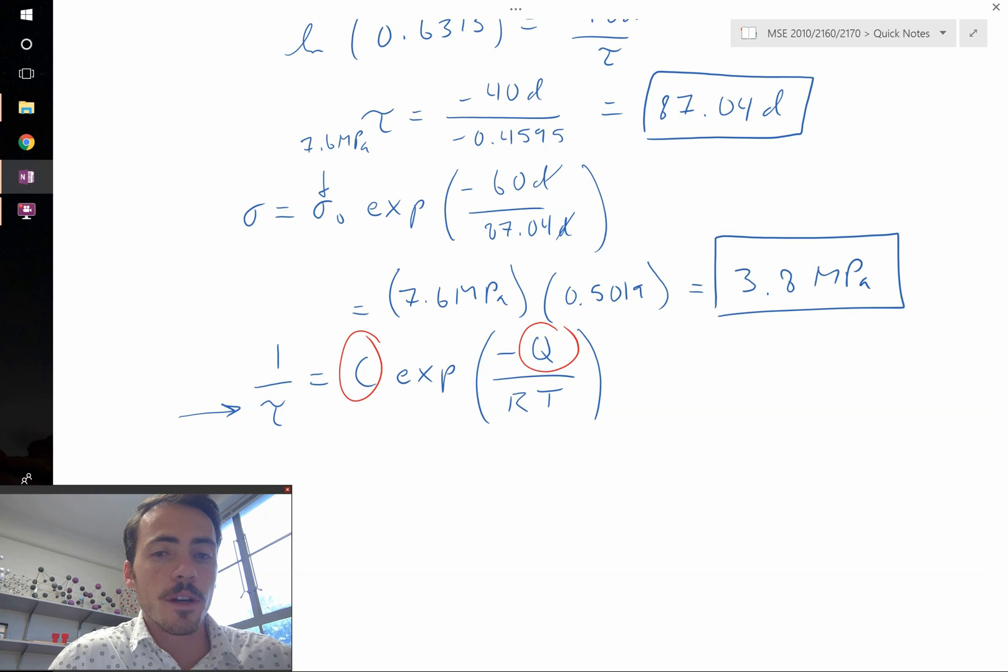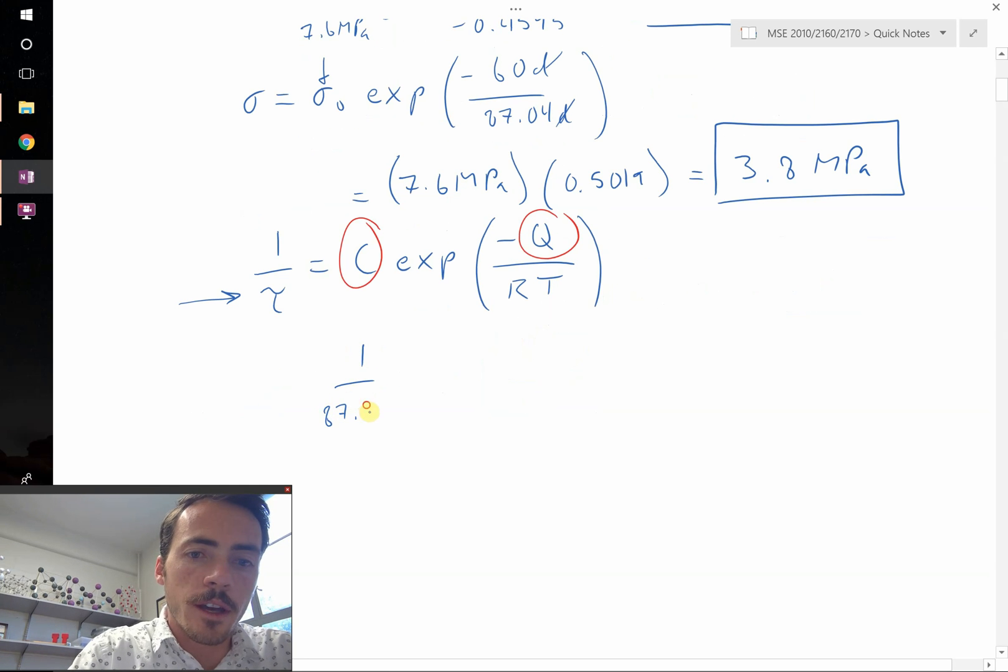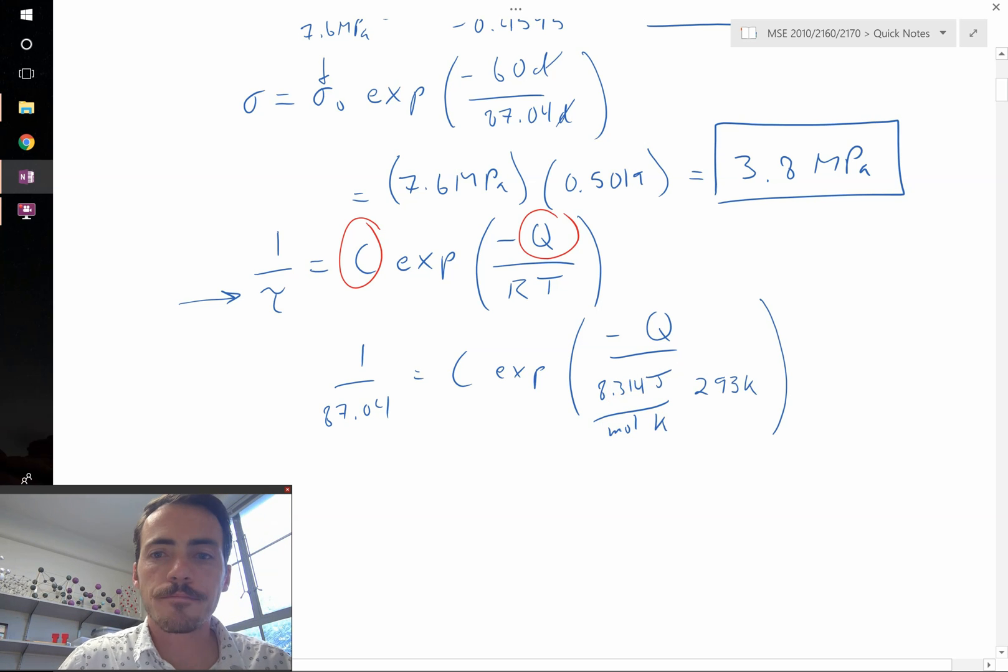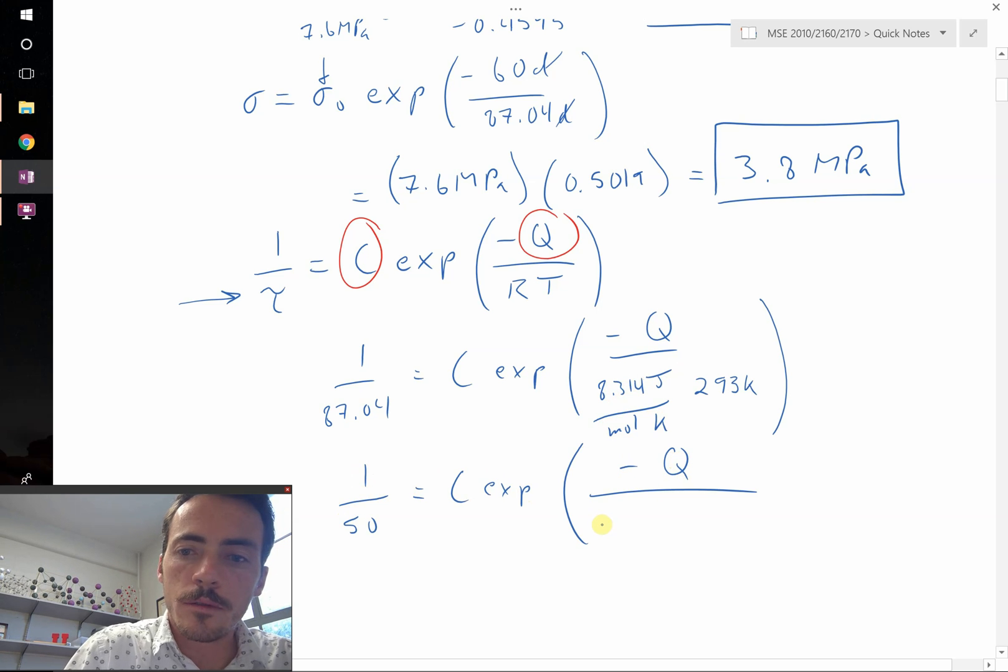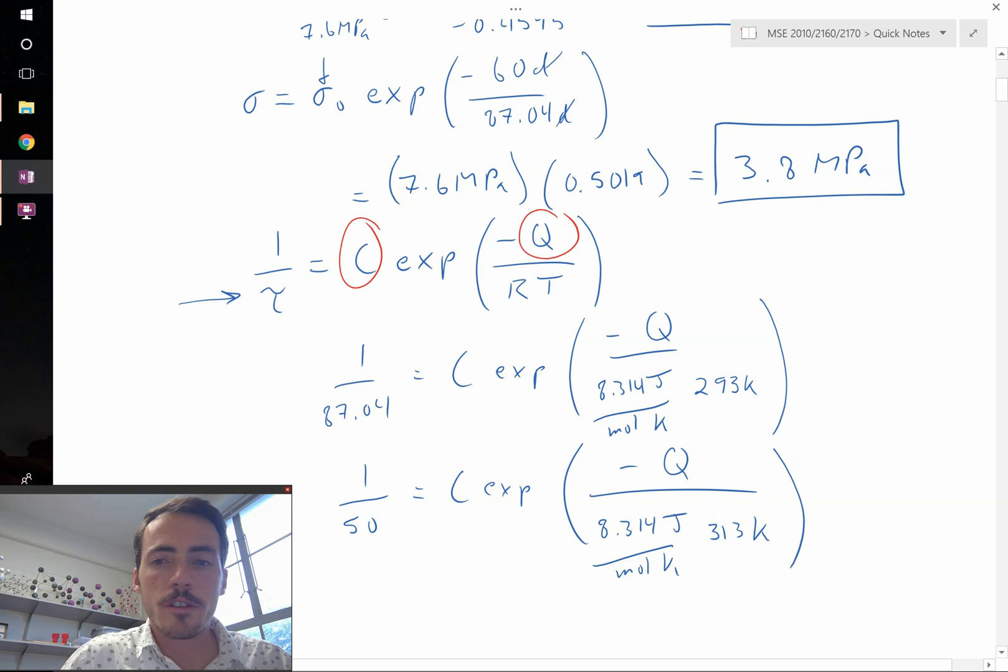We have 1 divided by 87.04 equals C times the exponential of negative Q over 8.314 joules per mole Kelvin, multiplied by 293 Kelvin. On the other hand, we have 1 divided by 50 equals C times the exponential of negative Q over 8.314 joules per mole Kelvin, multiplied by 40 plus 273, which is 313. If we divide these two equations by one another, then the C's cancel out. That's what allows us to solve for the Q now.